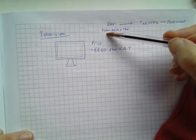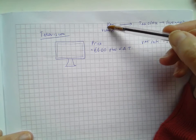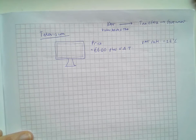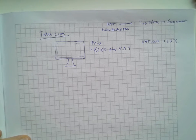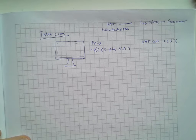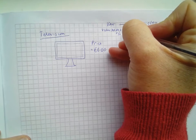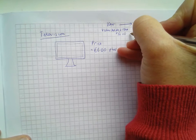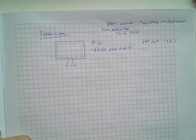Value-added tax — value-added — so basically it depends on how much the original item is, how much tax the government gets. So it doesn't just get €5 on every bicycle sold or €10 on every TV sold. It's a percentage of the cost price — a percentage of the price of whatever it is that the government gets.